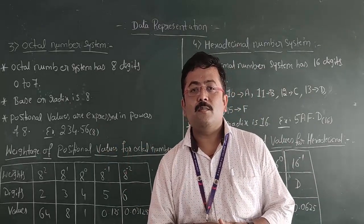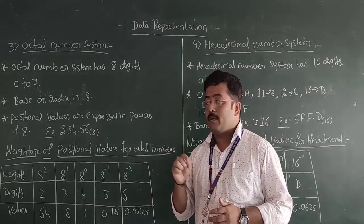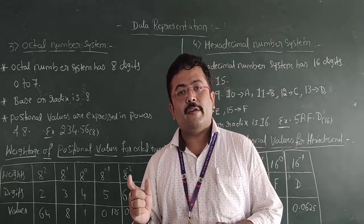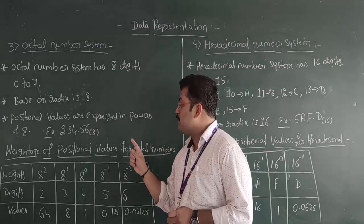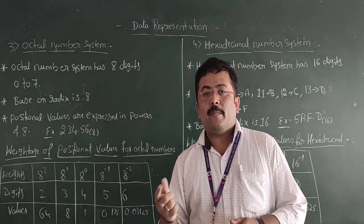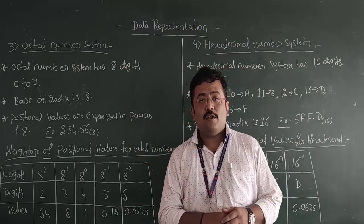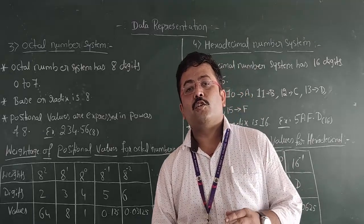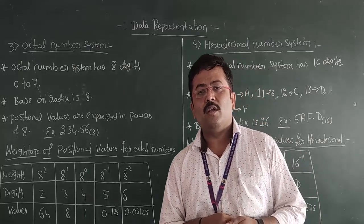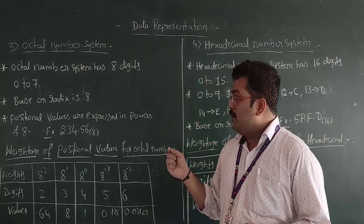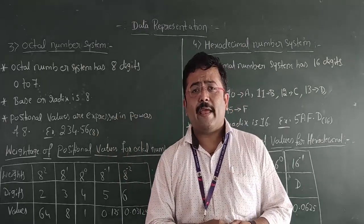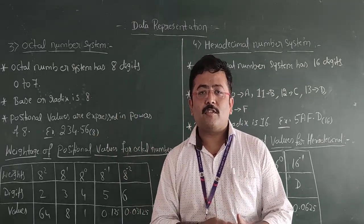In the decimal number system, the positional values will be 10 raised to 0, 10 raised to 1, 10 raised to 2, and so on, because positional values are expressed in powers of 10. In the binary number system, positional values are expressed in powers of 2, like 2 to the power of 0, 2 to the power of 1, and so on. So in the octal number system, the positional values are expressed in powers of 8.